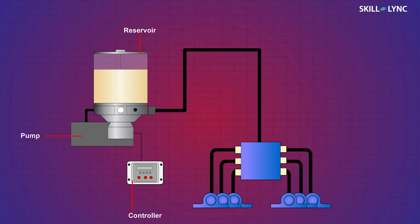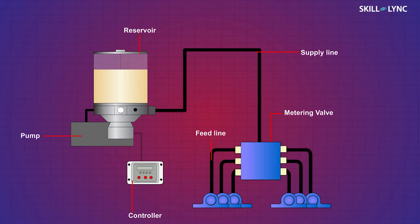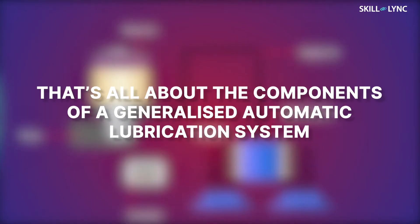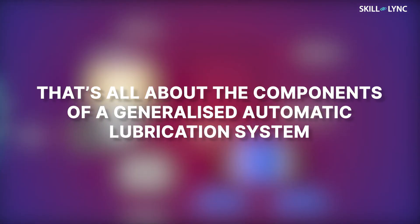A metering valve is used for measuring and supplying the right amount of lubricant. The lines which connect the pump and the metering valve are called supply lines, and the lines which connect the metering valve and points of application are called feed lines. That's all about the components of a generalized automatic lubrication system.